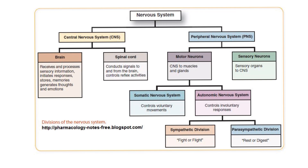Motor neurons can be divided into what they really control. The somatic nervous system controls basically voluntary movements. The autonomic — because it's automatic — controls involuntary responses. Those involuntary responses can be further subdivided into the sympathetic nervous system, often called the fight-or-flight system, because whether you're going to fight or run, it takes the same processes. The parasympathetic division of the autonomic nervous system is often called rest-or-digest, or the feed-or-breed system. It controls digestion, reproduction — basically things at rest.